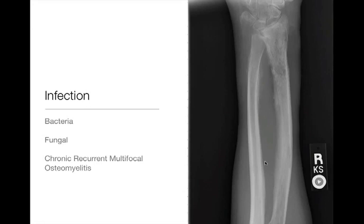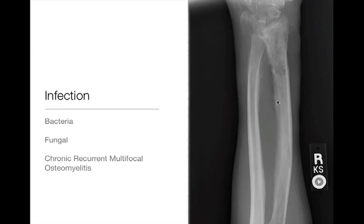Infection can present as a single focus or as multifocal osteomyelitis. There's an entity called chronic recurrent multifocal osteomyelitis, usually seen in younger patients, or you can have multifocal osteomyelitis associated with fungal infections, tuberculosis, or less commonly pyogenic bacterial infection. This patient has a permeated lesion in the distal radius with periosteal reaction about both the radius and ulna — this was a focal area of infection, but there could be other areas, making it multifocal.